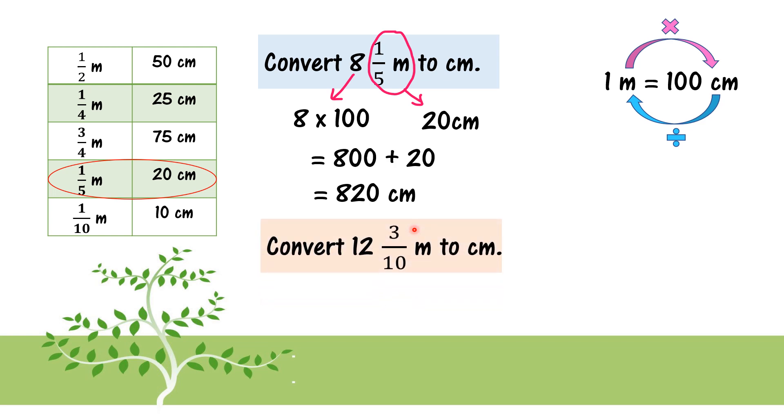Now, 12 and 3 over 10 meters to cm. This whole number, 12, means 12 times 100 because convert to cm. And then, the fraction, 3 over 10. Look at this one. 1 over 10 is 10 cm. 2 over 10, 20. So 3 over 10 is 30 cm. And then, when we times 12 times 100 is 1,200, and we total up with 30, we will get 1,230 cm.